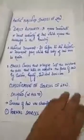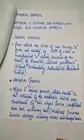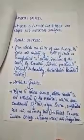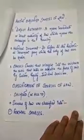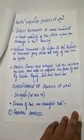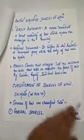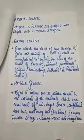Now, the classification of sources of law according to Salmond — another philosopher. According to Salmond, sources of law are classified into: one, formal sources; and two, material sources. Material sources are further subdivided into legal sources and historical sources.